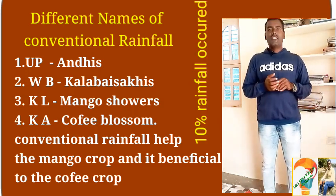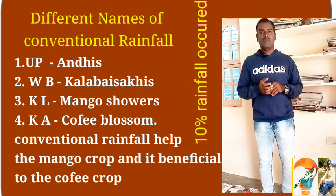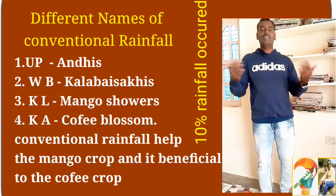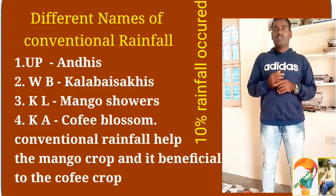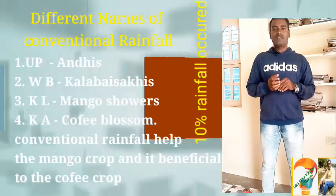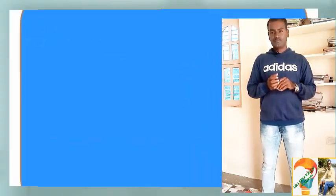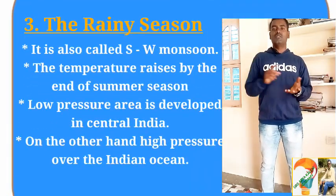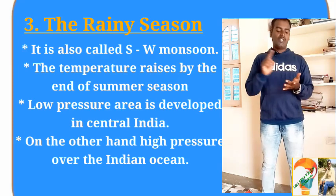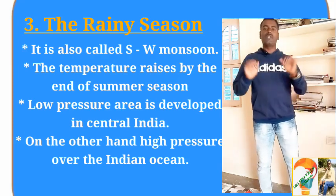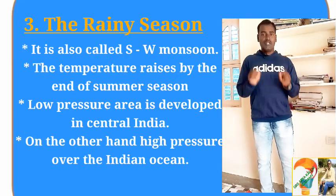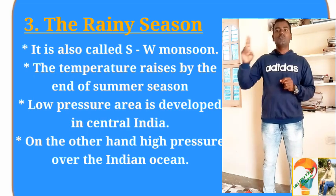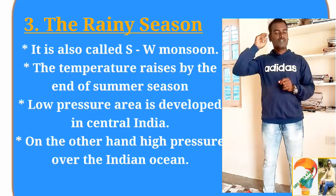The next season is very very important — that is the rainy season. The rainy season starts from June to mid-September: June, July, August, mid-September — almost four months. This is very very important for examination purposes because they ask two or three questions on this.